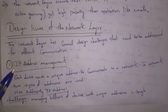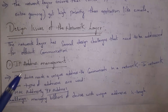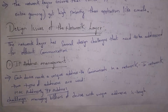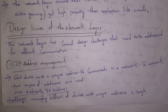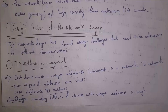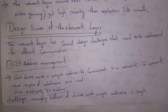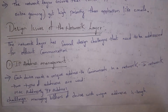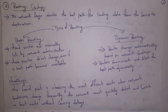Now I will explain design issues of the network layer. The network layer has several design issues that it needs to identify and correct so devices can communicate efficiently. The first design issue is IP address management. In a network, each and every device is given a unique number called an IP address. There are two types of addresses: IP address and MAC address. The network layer assigns an IP address to each device, but the problem is there are billions of devices in the network, so assigning an IP address to each one is very challenging.